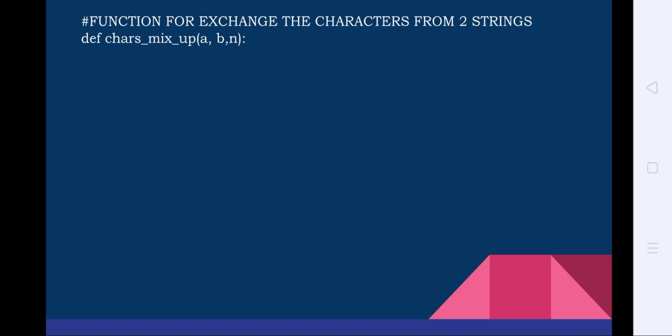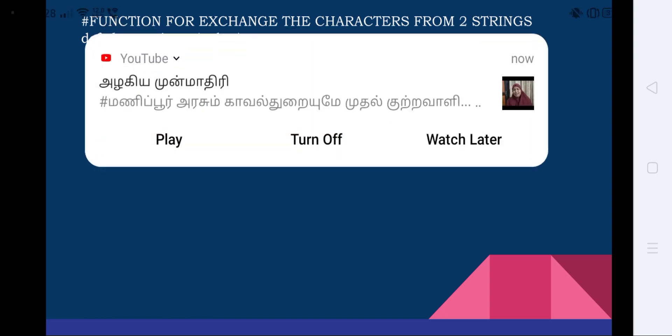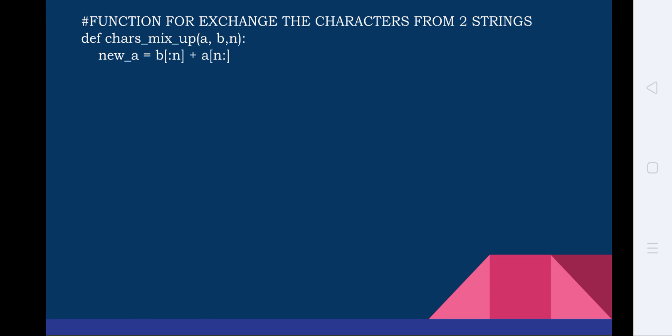We are using the function definition `def char_mixup`, with parameters a, b, and n. Here, a is the first string, b is the second string, and n is the number of characters to remove and exchange. The function creates a new string, new_a, which equals `b[:n] + a[n:]`. Here b and a are arrays or lists, and the plus operator performs concatenation — joining part of string b with part of string a to give the new string new_a.